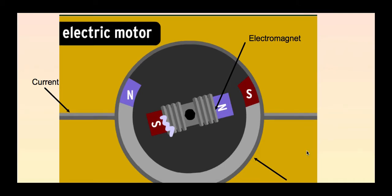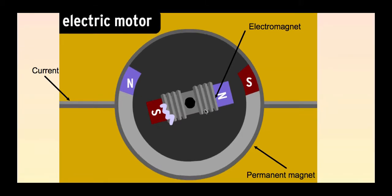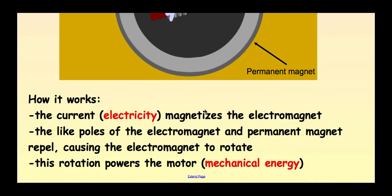So it all goes back to the opposites attract, likes repel. Because the outer magnet is magnetized, now the inner electromagnet is going to either attract or repel. So it becomes kind of this constant cycle. The outer permanent magnet, the permanent magnet is magnetized. The inner magnet is in constant states of likes repel. That constant state of like repelling, opposites attracting, is causing rotation. So the current is the electricity. It magnetizes the electromagnet. Then the like poles of the electromagnet and the permanent magnet are repelling, which causes the electromagnet to rotate. And this rotation powers the motor, which is mechanical energy.